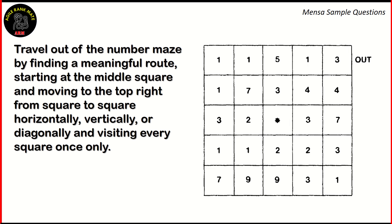Next question. This is a maze given here. We need to travel out of this number maze by finding a meaningful route. This meaningful route can be any given number series, which we can use to get from the center to the top right square. We can move horizontally, vertically, or diagonally. However, we can only visit every square once. So we can use multiple number series — whole numbers, natural numbers, odd numbers, even numbers, and so on — but we need to find out a way to get from the center to the outside.